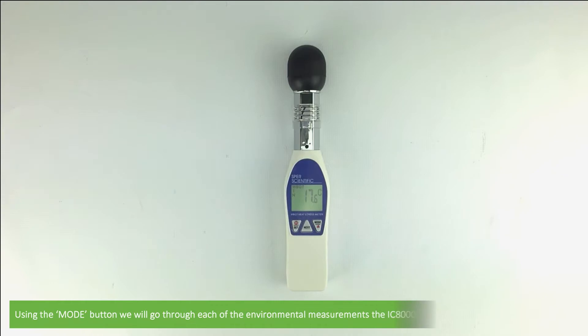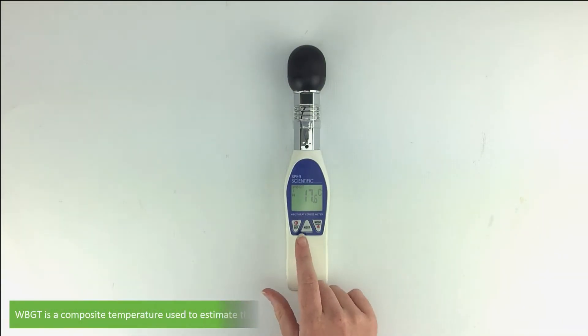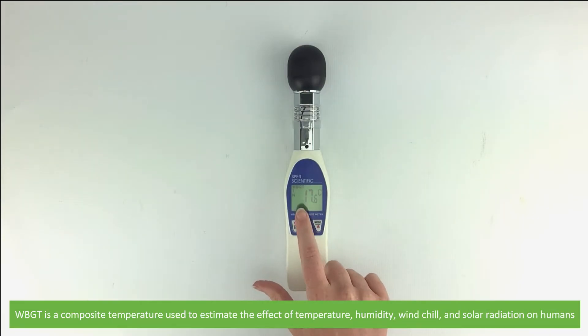Using the MODE button, we'll go through each of the environmental measurements the IC800036 makes. We are currently on wet bulb globe temperature. Wet bulb globe temperature is a composite temperature used to estimate the effect of temperature, humidity, wind chill and solar radiation on humans.